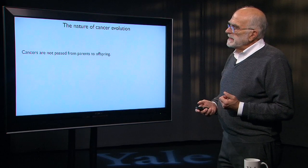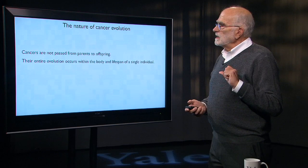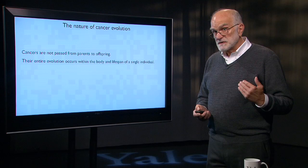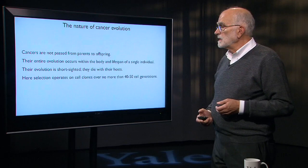Cancers are not passed from parents to offspring, with some very rare exceptions in dogs. Their entire evolution occurs within the body and within the lifespan of a single individual. Their evolution ends when their host dies. That means it's short-sighted evolution.